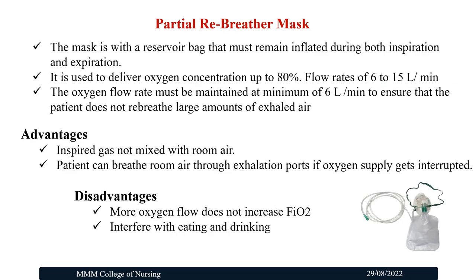Partial Rebreather Mask has a reservoir bag that must remain inflated during both inspiration and expiration. It delivers Oxygen concentration up to 80% at a flow rate of 6–15 litres per minute. The flow rate must be maintained at a minimum of 6 litres per minute to ensure the patient does not rebreathe a large amount of exhaled air. Advantages: inspired gas is not mixed with room air, and the patient can breathe room air through exhalation ports if oxygen supply is interrupted. Disadvantages: more oxygen flow does not increase the fraction of inspired oxygen, and it interferes with eating and drinking.